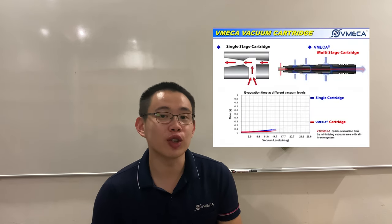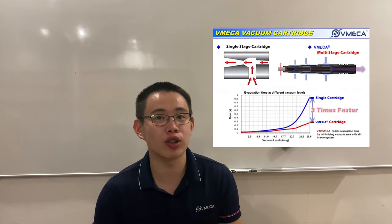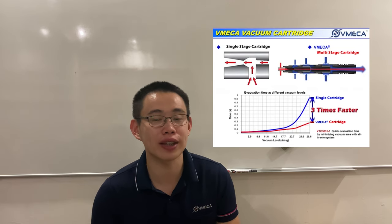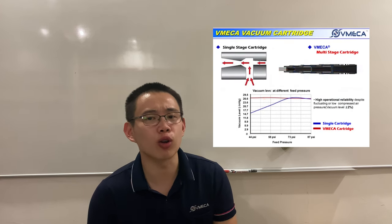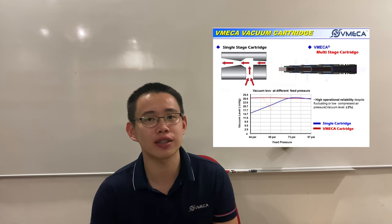The vacuum level is now approximately three times higher and response times one and a half times greater than the conventional air injector. Despite the fluctuating or low compressed air, the vacuum cartridge can remain very steady and constant.